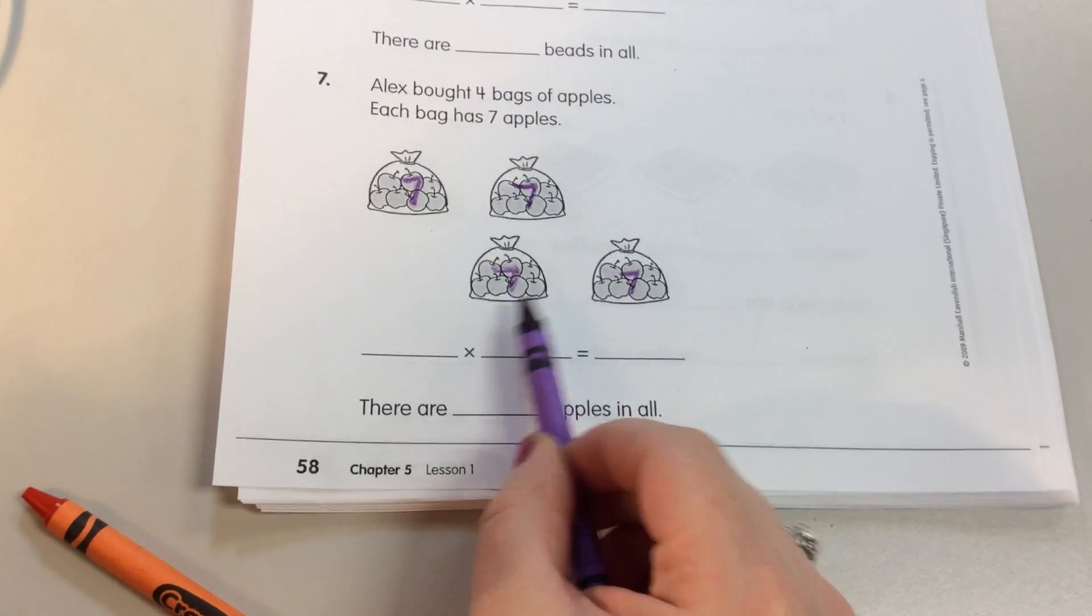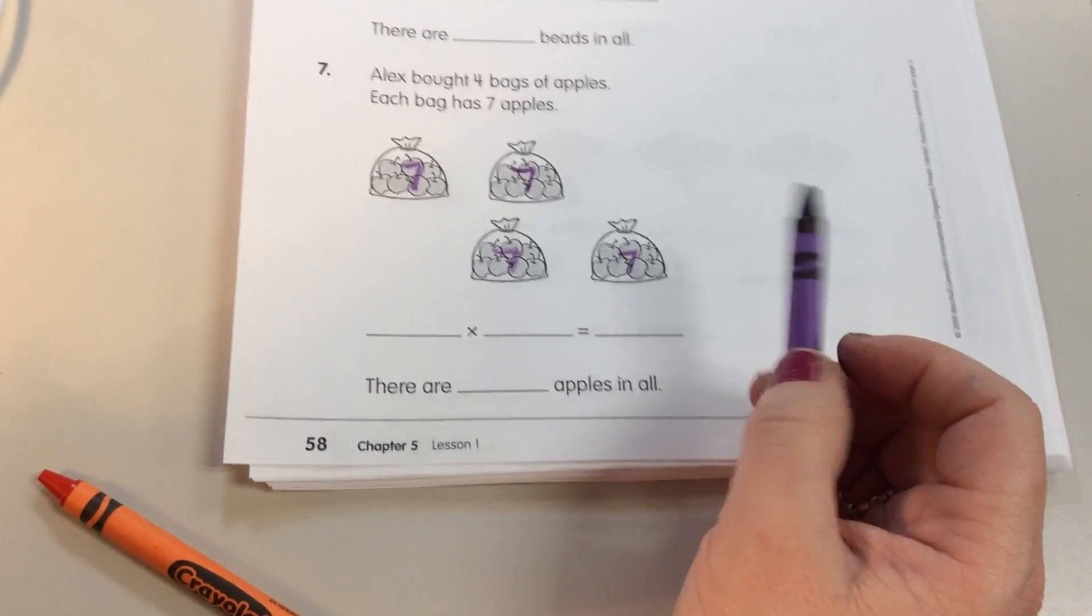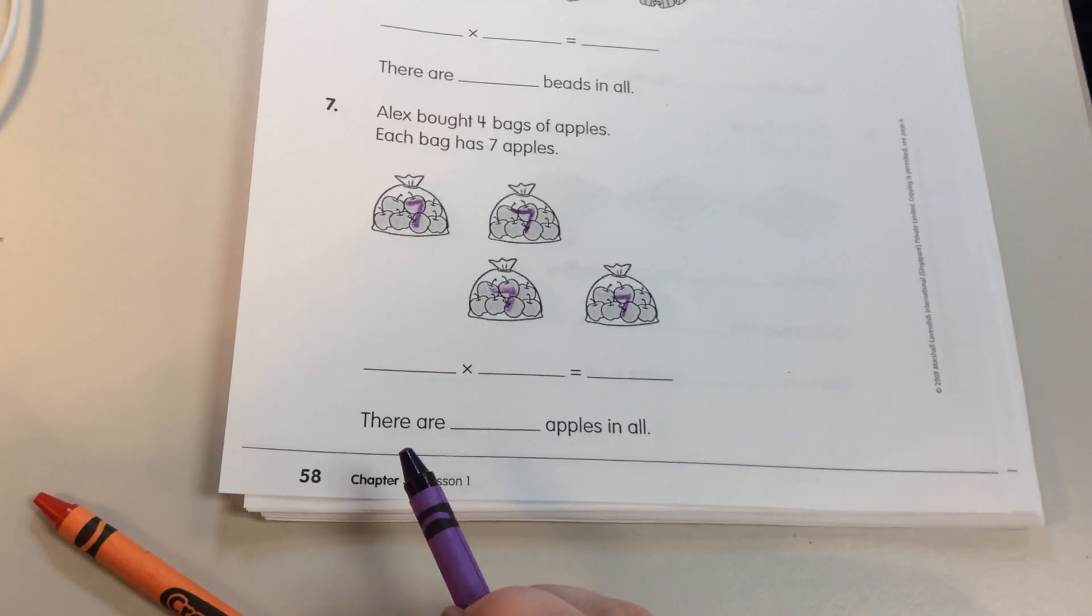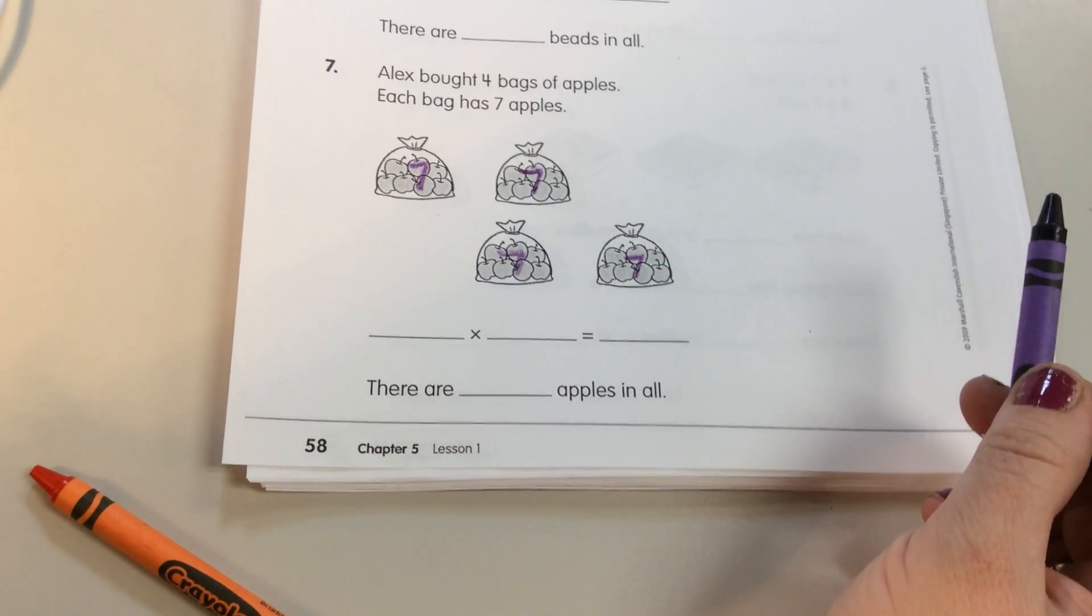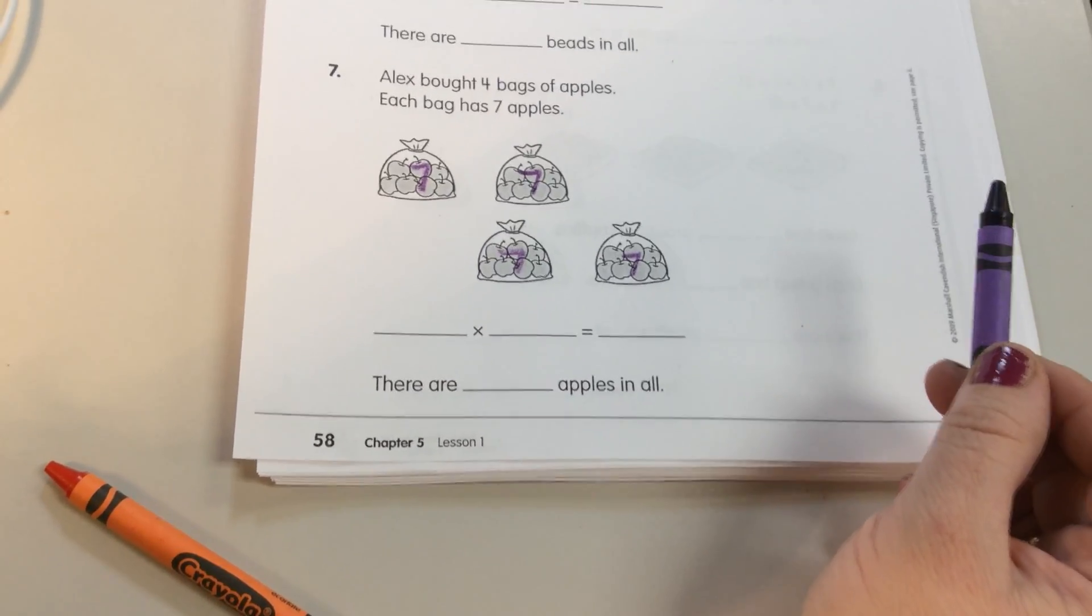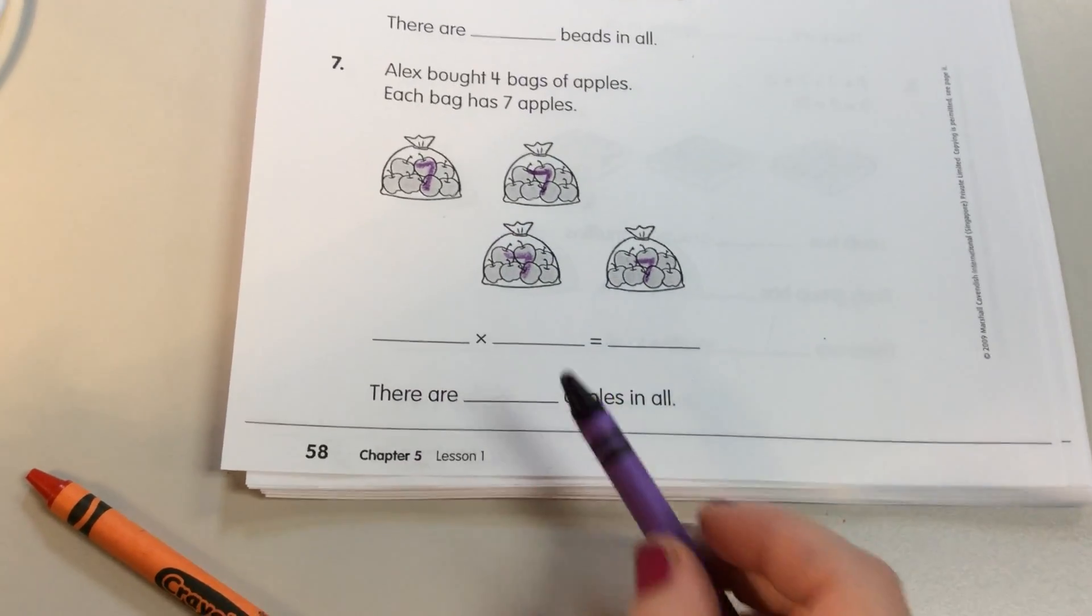Now, so we see, what do we see here in these bags of apples? Four groups. Yes, Christopher. We do have four groups, you're right. Now, do they all have the same amount? Yes. Does everybody agree? They're all the same. They're equal amounts.